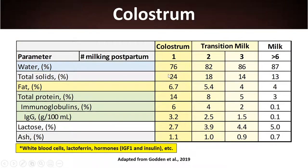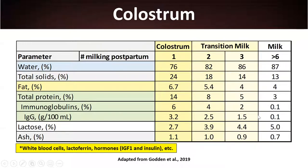As shown in this table, total solids are highest in colostrum — the first secretion — and then decrease through transition milk. Fat concentration decreases, total proteins decrease, and among those proteins, very important ones are immunoglobulins, especially IgG1. On the opposite end, lactose is increasing — lactose is the osmotic driver for milk production — so as lactose increases, water content in the secretions increases. Ash also decreases from colostrum to the sixth milking, which would be commercial milk.